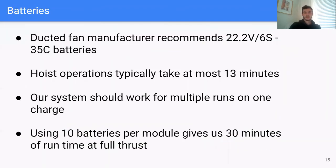For the batteries, the ducted fan manufacturer recommends 22 volt 6 cell 35 Coulomb batteries. Given that hoist operations typically take at most 13 minutes, our system should work for multiple runs on one charge. This means using 10 batteries per module gives us 30 minutes of runtime at full thrust. This means we can run at least two hoist operations on one charge in the worst case scenario.